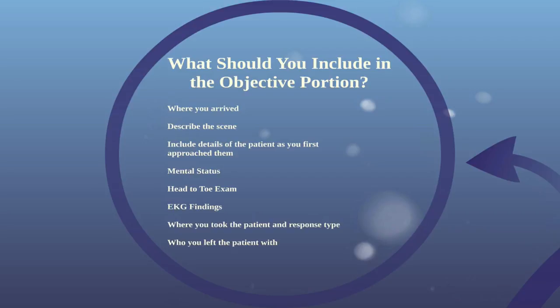Obviously include details about the patient, and go ahead and include details of what you saw as you first approached them. Did the patient track you as you entered the room? Were they conscious? The things that you first notice as you walk in to treat the patient. What's their mental status? Do a head-to-toe exam and document each piece of that. Go through any EKG findings that were abnormal, or if the findings were normal, document that as well. Document where you took the patient, that we took the patient to an appropriate facility, and how you got them there — did you go lights and sirens or just a simple drive? Document who you left the patient with for continuity of care.